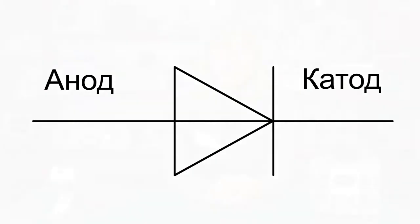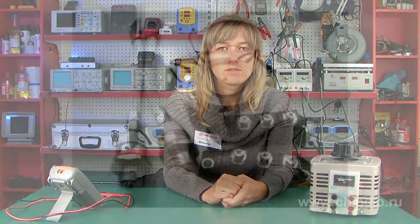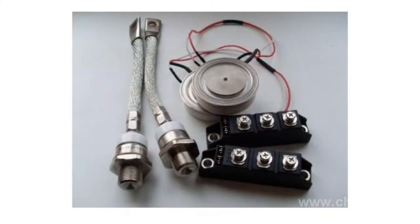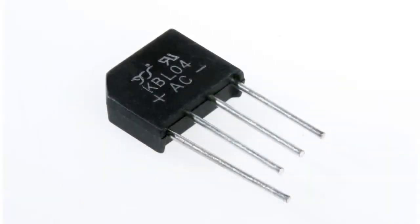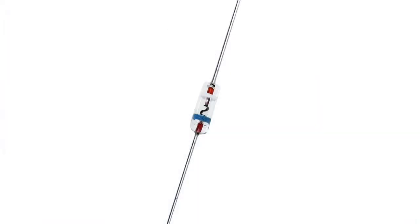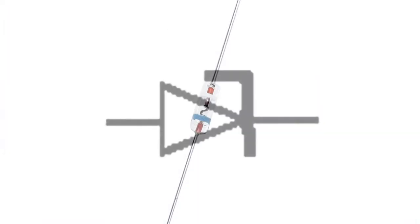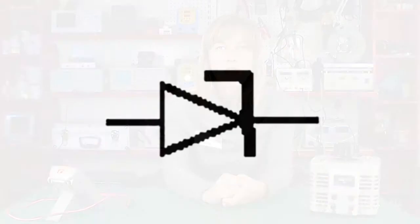Semiconductor diodes are widely used in radio electronics. Diodes may be avalanche diodes, rectified diodes, varistors, varicaps, diode bridges, and stabilitrons. Stabilitrons are designated like this. They are switched on by reverse polarity, and their feature is a PN junction back biased, so they stably maintain the set potential.